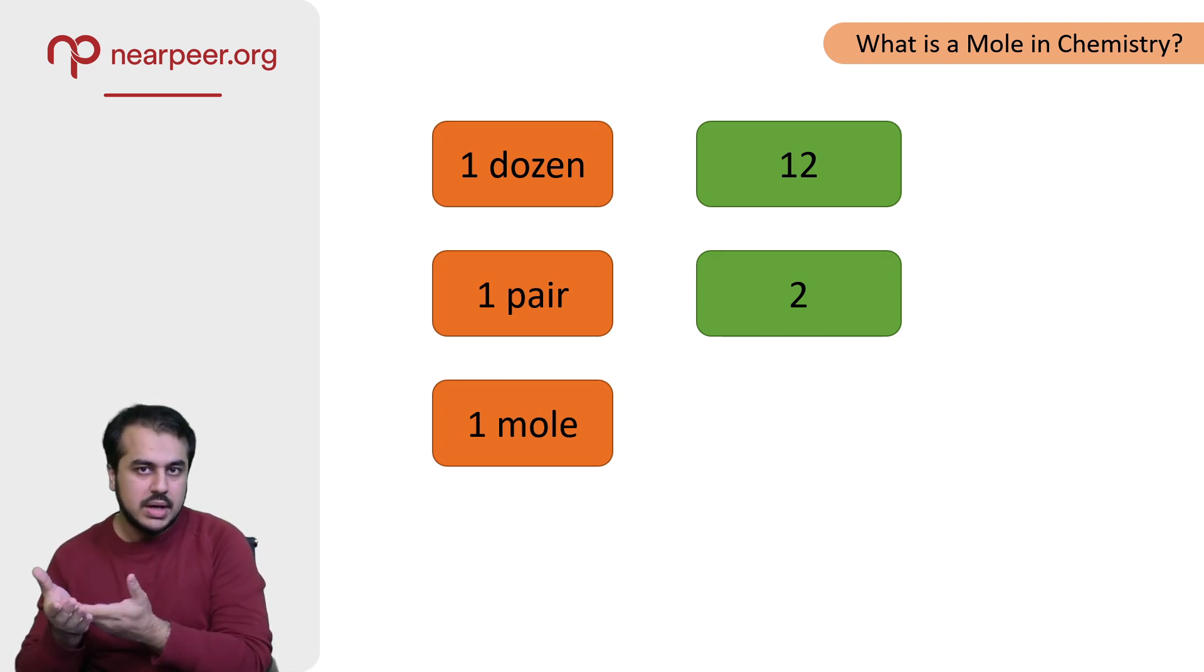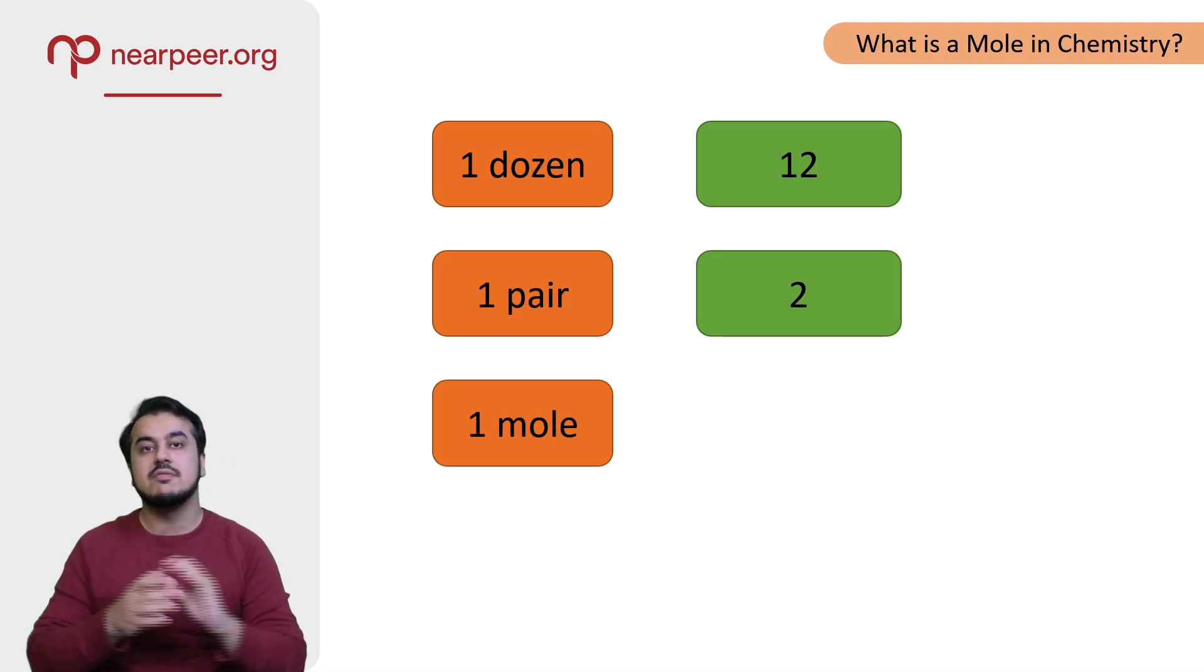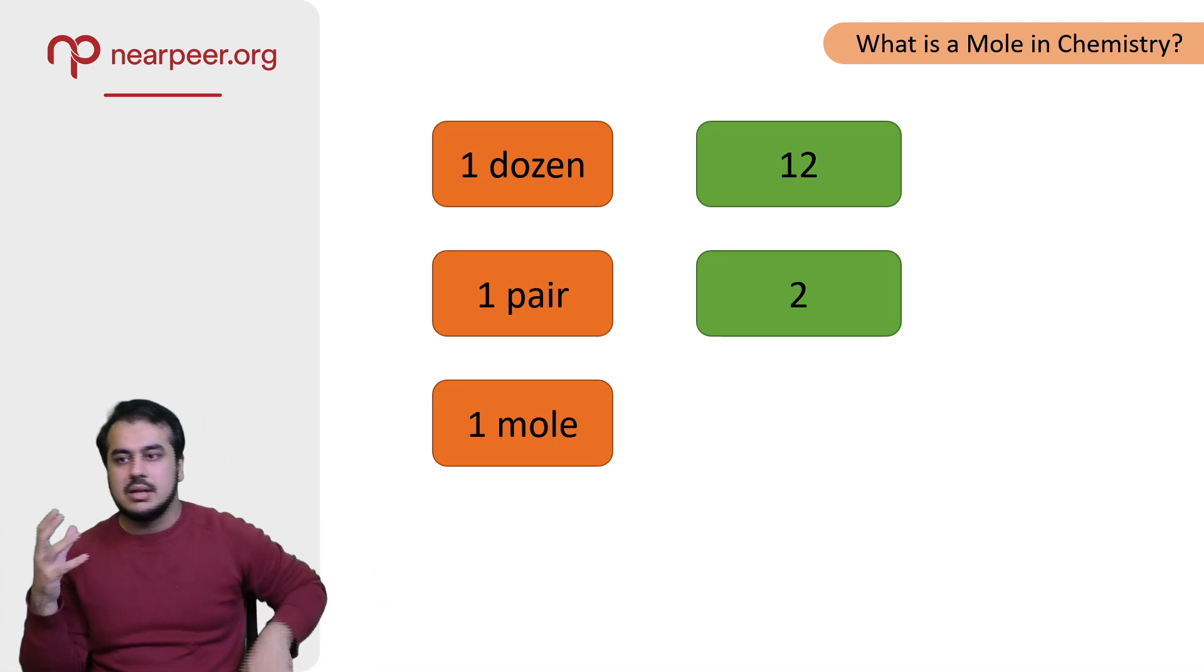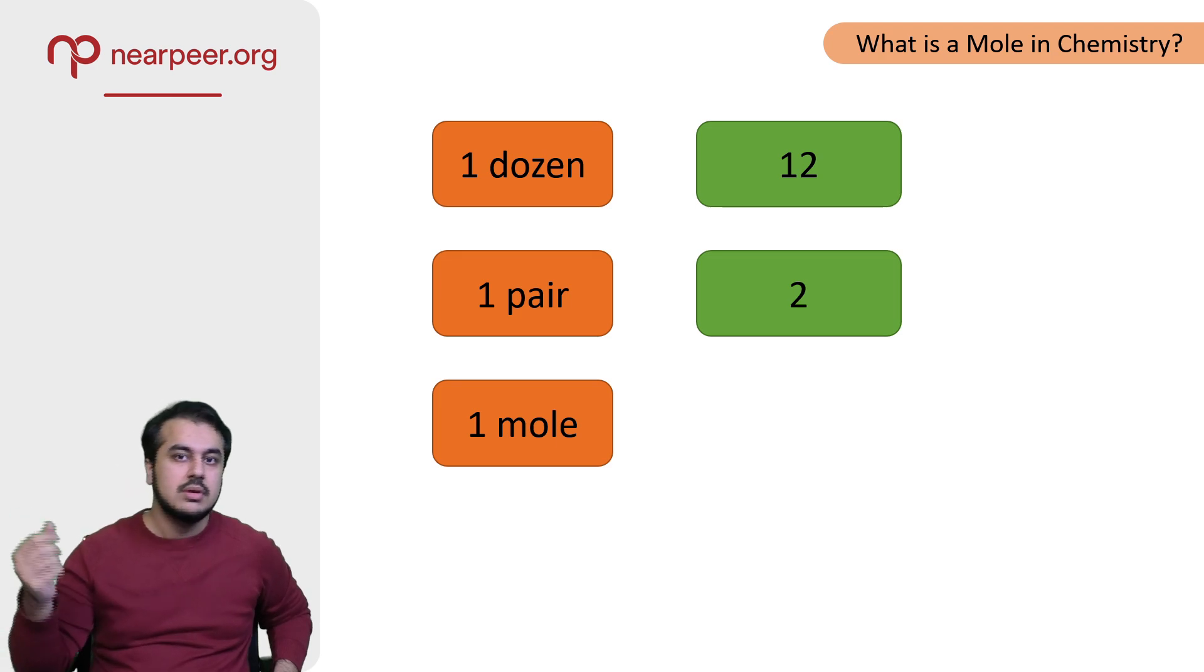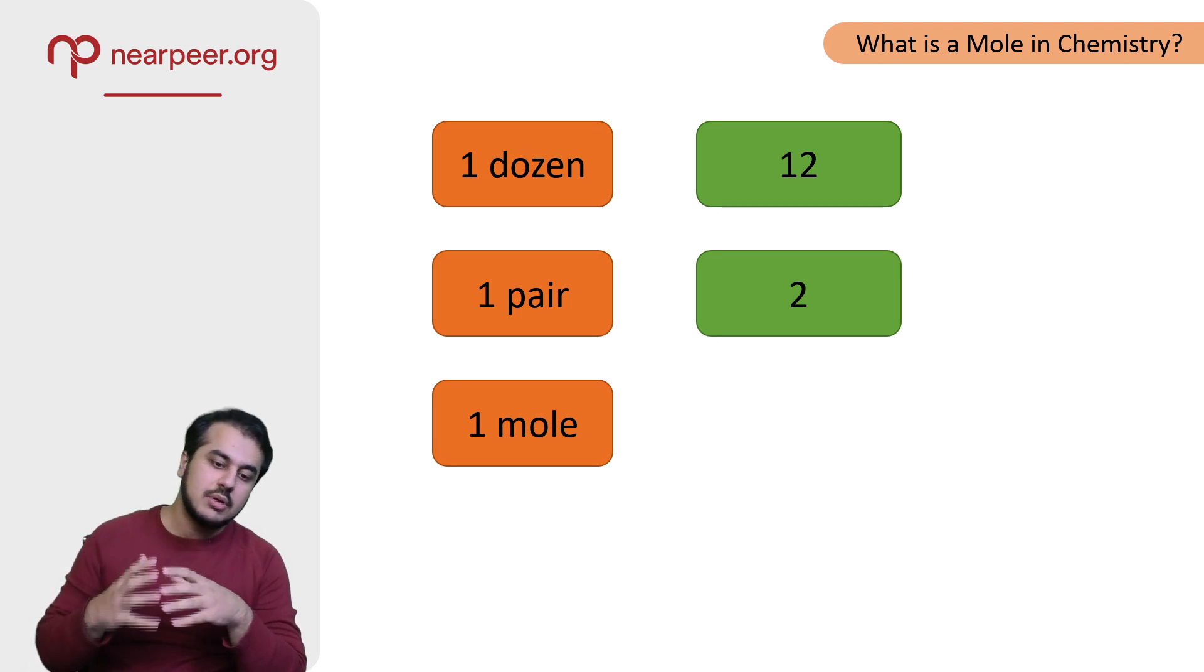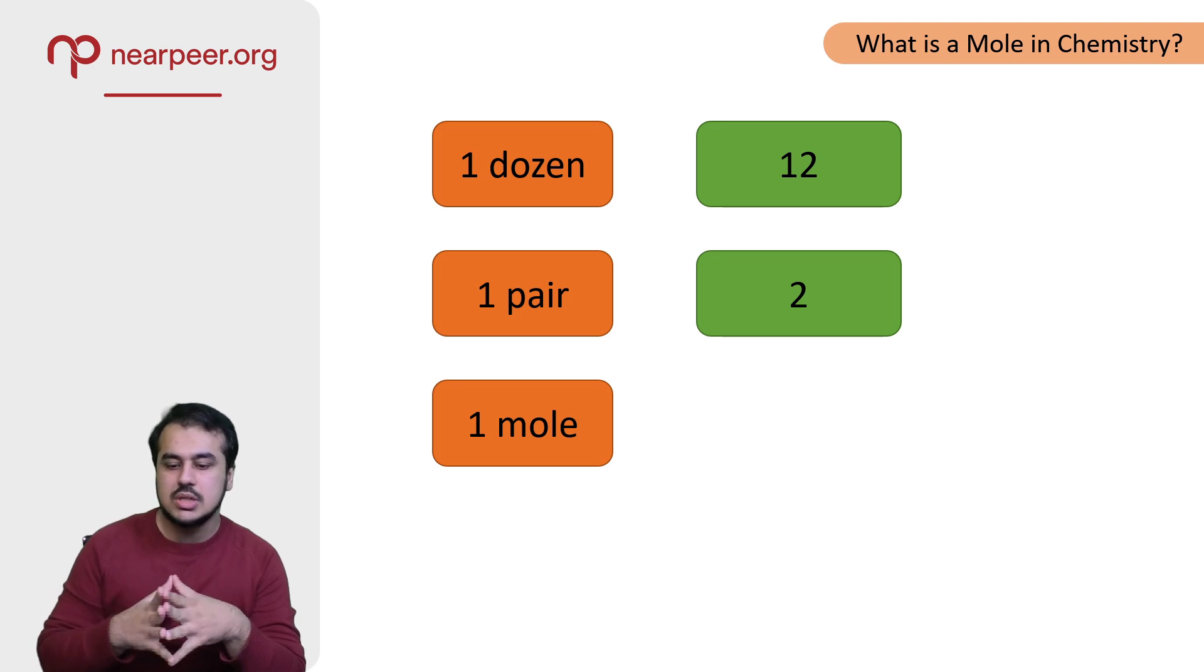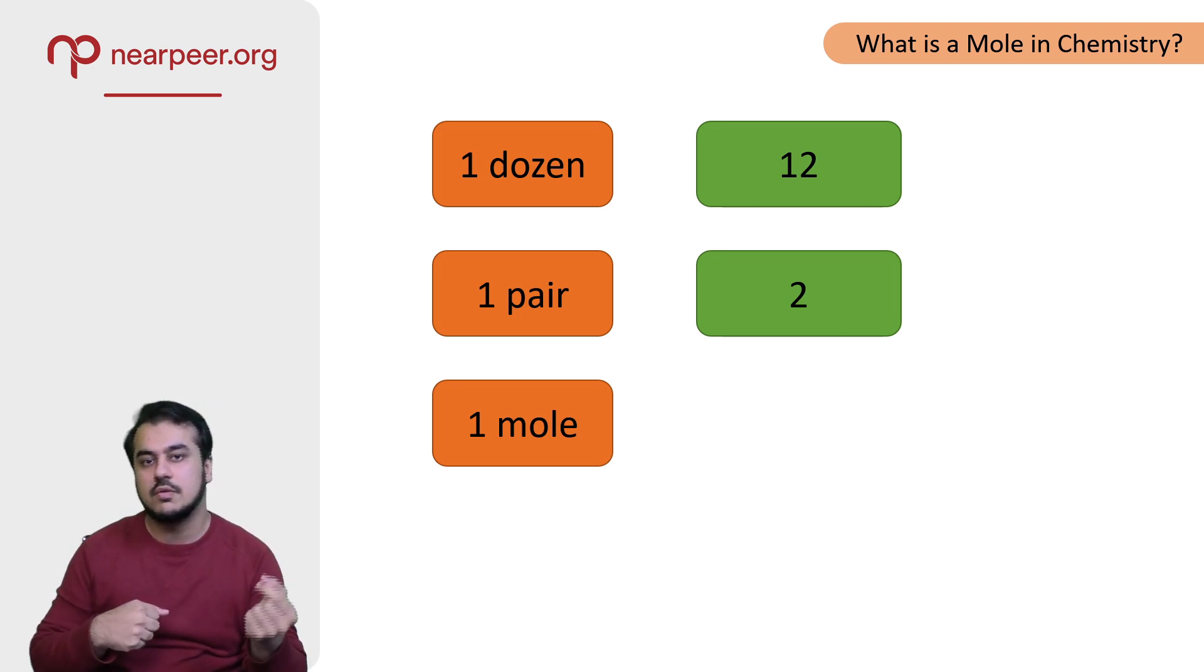If I say one mole, now a mole represents a very, very big number, and you don't deal with such a big number in your regular life unless you're talking about an atomic level. I think now you understand that because we're talking about atoms in chemistry, we also use the terminology of a mole.